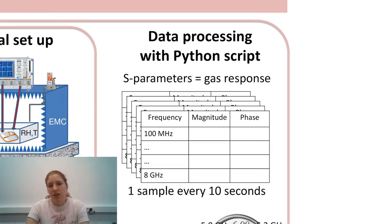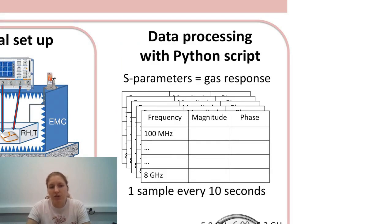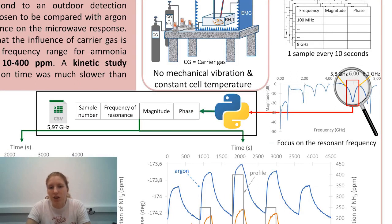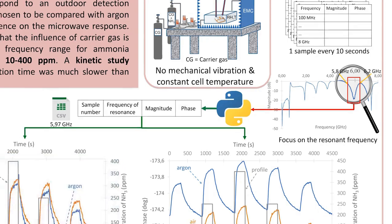Every 10 seconds, S-parameters are retrieved from the VNA. To process the sensor's response, we use a Python script. The program is given a frame of the desired resonance frequency. From this frame, it will find the frequency of resonance and save it into a CSV file with its corresponding magnitude and phase.